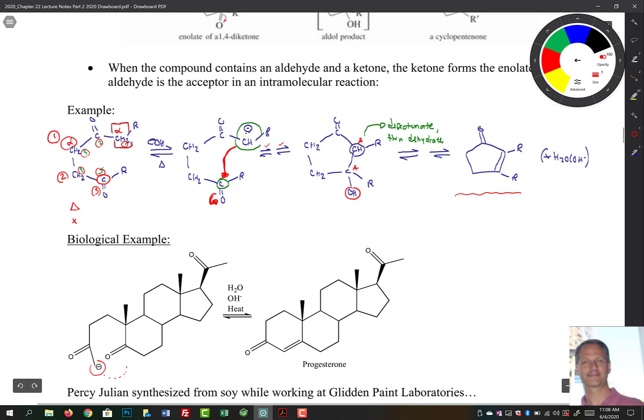So we do our deprotonation, and then we're going to swing over here, react to that carbon, and then come over and give us an O minus, and then we're going to protonate it to give our OH. So here's your beta-hydroxy ketone. We deprotonate it, and then we'll dehydrate that, and that will give us our final product over here. So you've done two things. You've made a carbon-carbon double bond, and you've made a ring here.